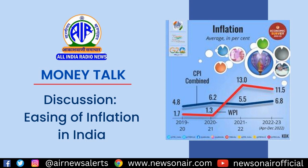If something is 100 and it becomes 101, that's 1%. In the next period, if it becomes 102, it has not gone up by 1% — it's gone up by less. So the inflation rate has gone down, but actually the prices have gone up. That's the first important distinction.